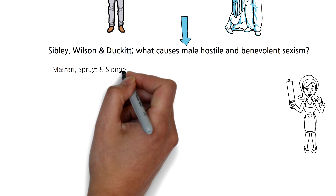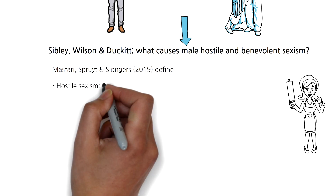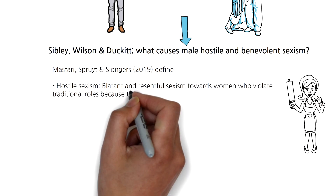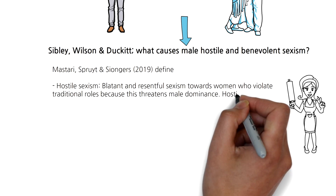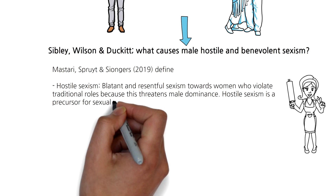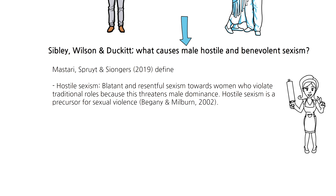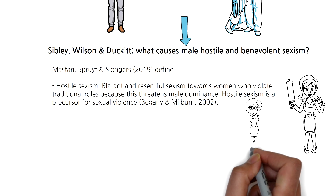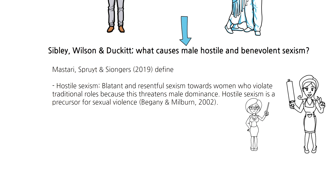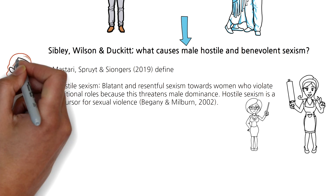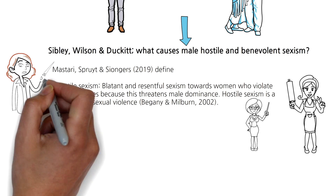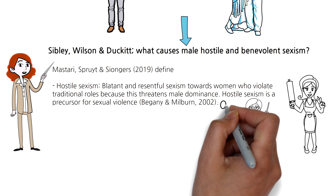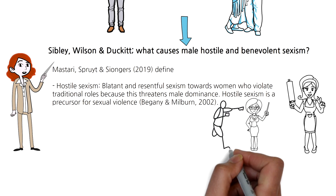It's important to note that there are two types of sexism defined here: benevolent sexism and hostile sexism. Research by Mastari, Sprite and Siongers in 2019 has defined both. Hostile sexism aims to preserve men's dominance over women — it is often very blatant and directed towards women in a very resentful way, especially women who violate traditional female roles. This is because women who do not comply with traditional roles are perceived as a threat to men's dominant position. The aim of hostile sexism is to keep women in a subordinate position, and as research by Bagani and Milburn in 2002 has shown, it can even be a precursor for sexual harassment and violence towards women.